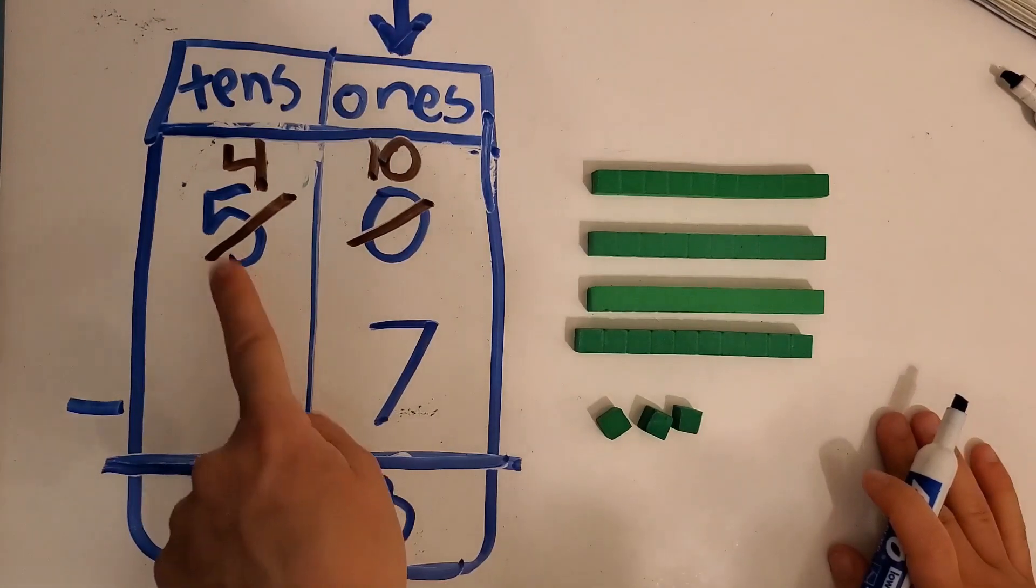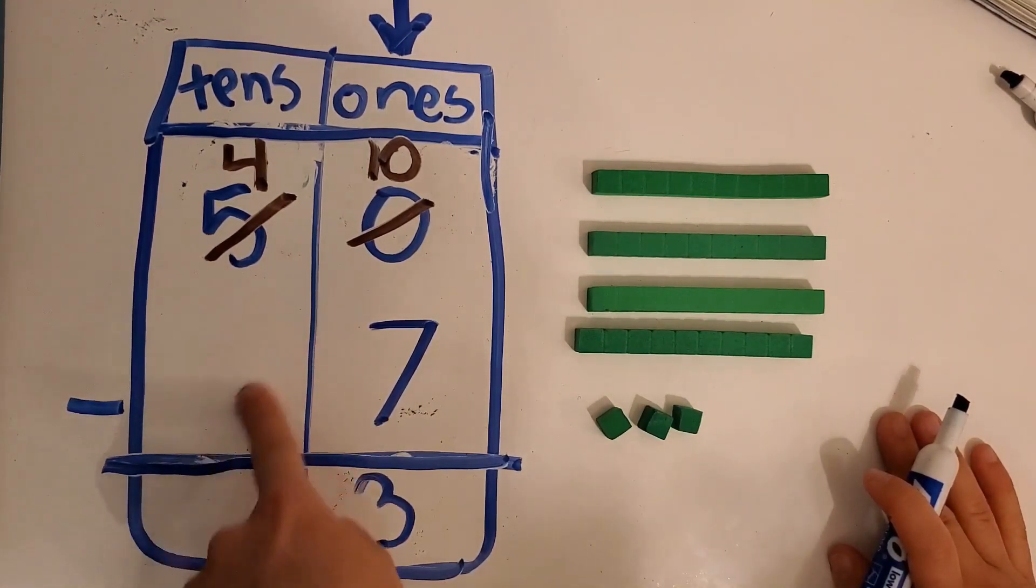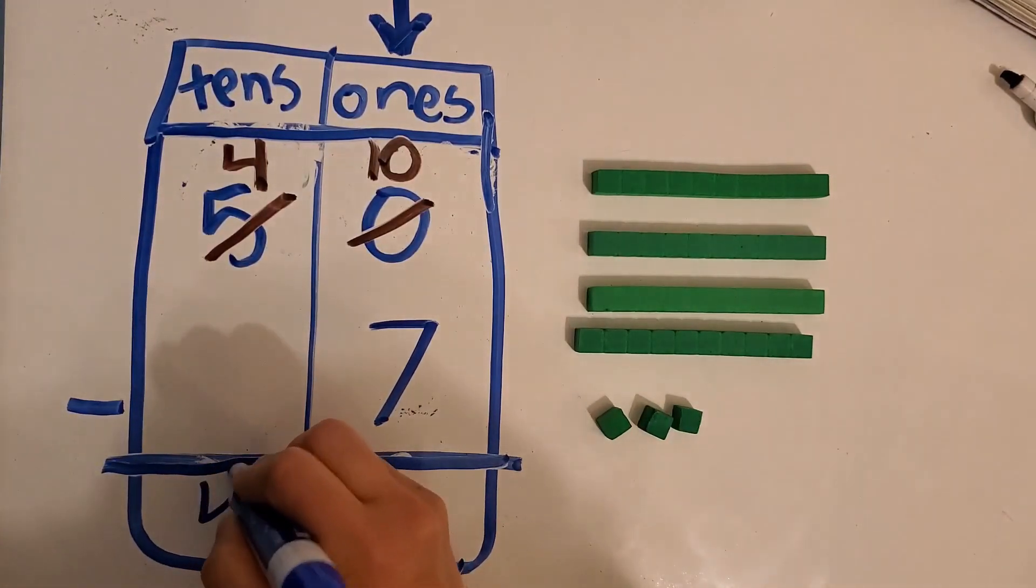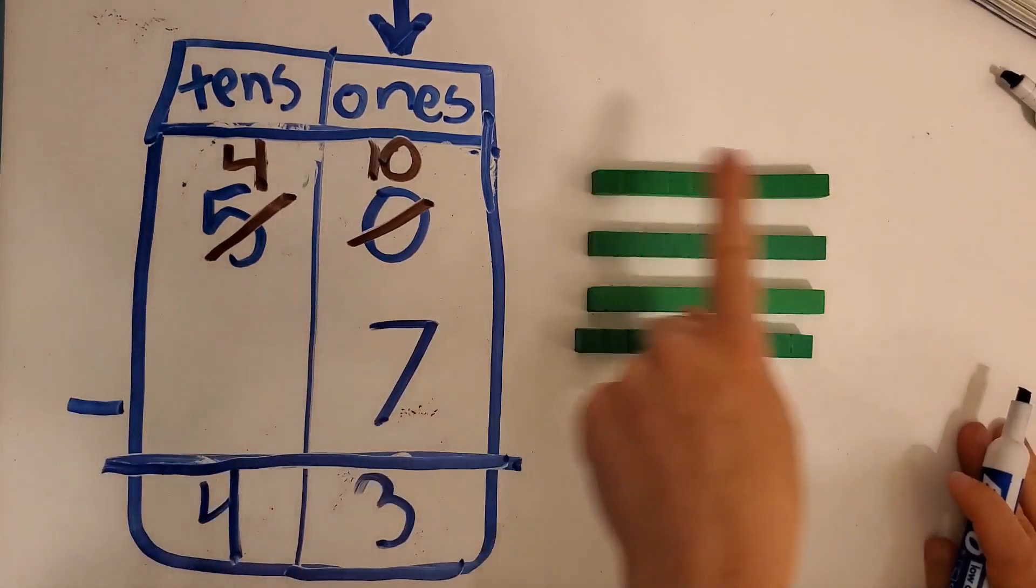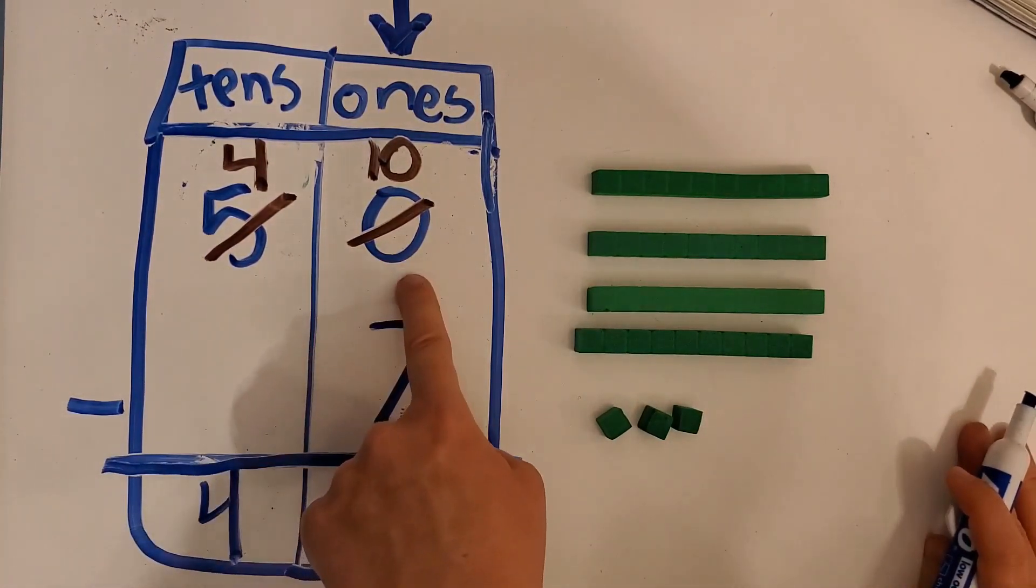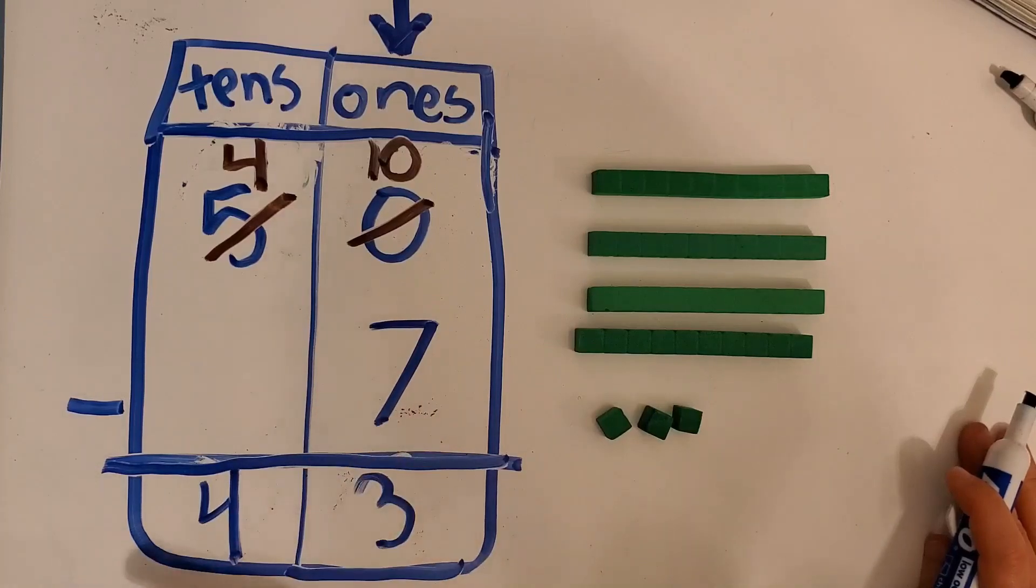And we have four tens. And look, there's no number here, so we're not taking away any. So then the four just stays right here. So we have four tens and three ones, which is 43. So 50 minus seven equals 43.